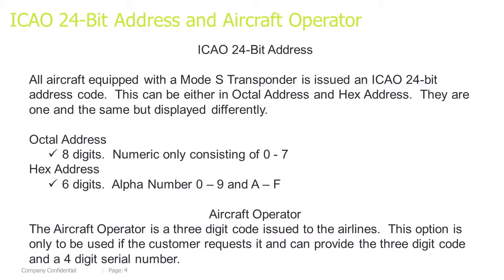Octal Address: this is an 8-digit code, numeric only, consisting of digits 0–7. Hex Address: a 6-digit alphanumeric code using numbers 0–9 and letters A–F.